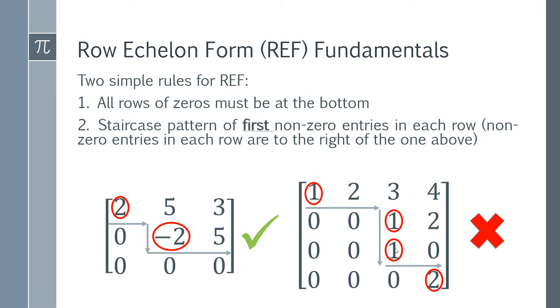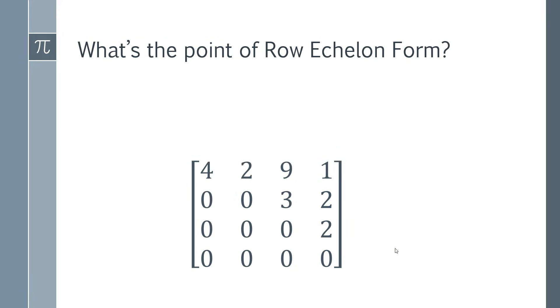You can now hopefully look at a matrix and tell whether it's in row echelon form or not. That's the first step. Then we need to think about what is the actual point of row echelon form. Why do we bother putting matrices in this form?